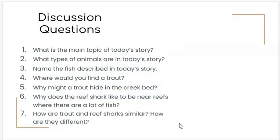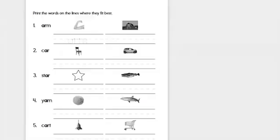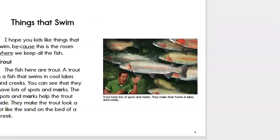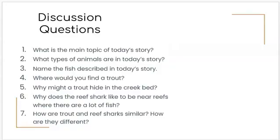So let's answer some questions about today's story. What's the main topic of today's story? What type of animals are in today's story? There were two. A reef shark and trout. Name the fish described in today's story. We just said the reef shark and the trout. Where would you find a trout? If we look back at the story we can see that a trout swims in cool lakes and creeks. So that would be where we find them in cool lakes and creeks. Why might a trout hide in the creek bed?